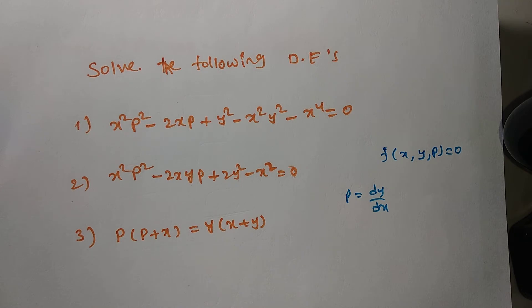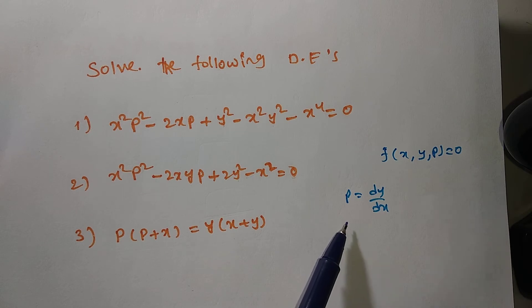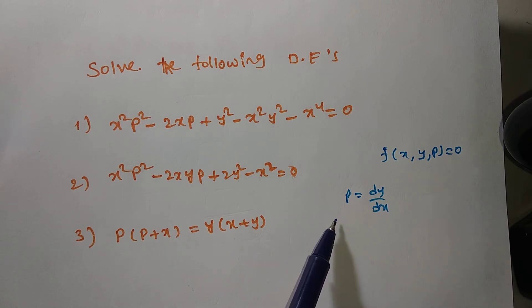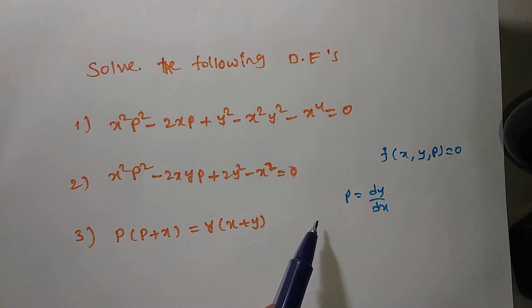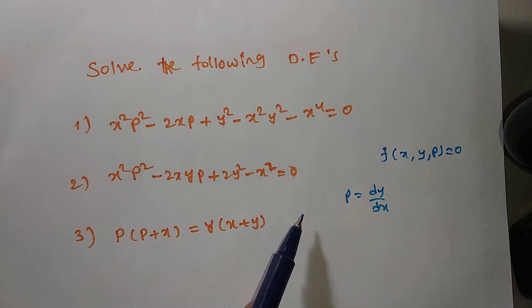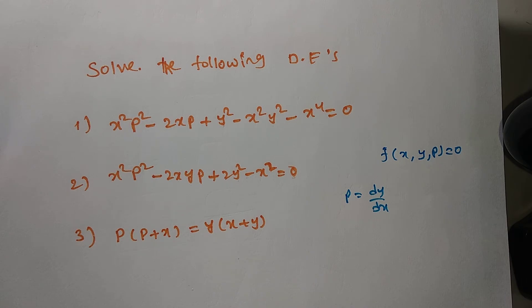Once converted to first order first degree, we have many methods available. In previous problems using solvable for p, after reducing to first order first degree we used only the variable separable method. But in this case, not only variable separable — we may also use linear first order differential equations, the form M dx + N dy = 0, homogeneous method, or inspection method. These are a bit tougher problems, chosen based on student interest.